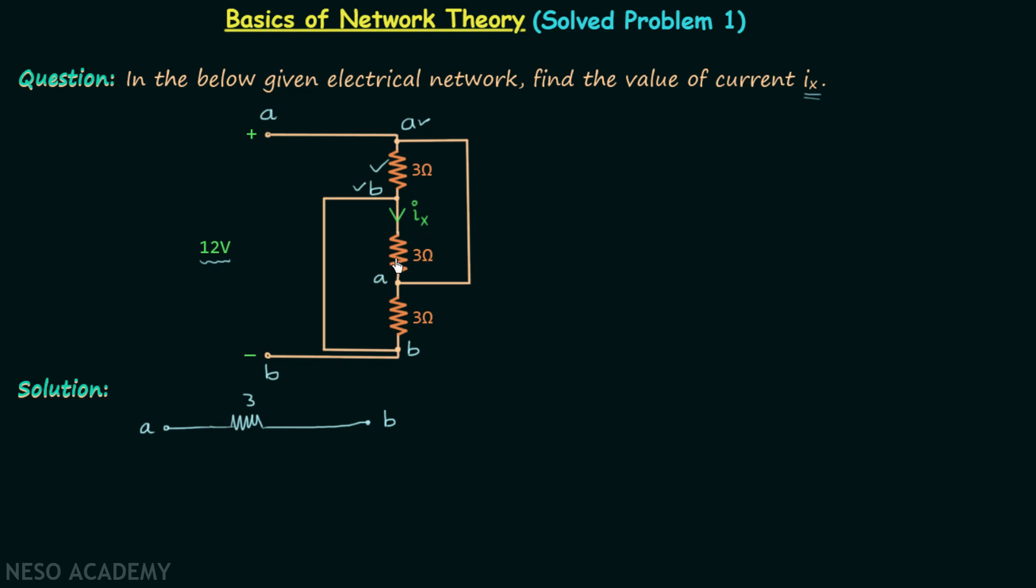we again have a 3 ohm resistor, so we will connect our next 3 ohm resistor in parallel with this 3 ohm resistor. Then between A and B we again have a 3 ohm resistor, so the third 3 ohm resistor will go in parallel with these 3 ohm resistors. So this is our new simplified network.